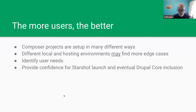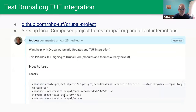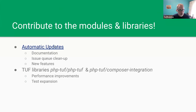The more users the better, because Composer projects and local environments differ. Identifying user needs is valuable — if you've used the WordPress updater and it has a feature we don't, we want to know. More users means more confidence for Starshot and core inclusion. The TUF integration on Drupal.org is getting pretty close, and there's a linked issue showing how to create a Drupal project that tests this integration against staging data now, and soon against live data.